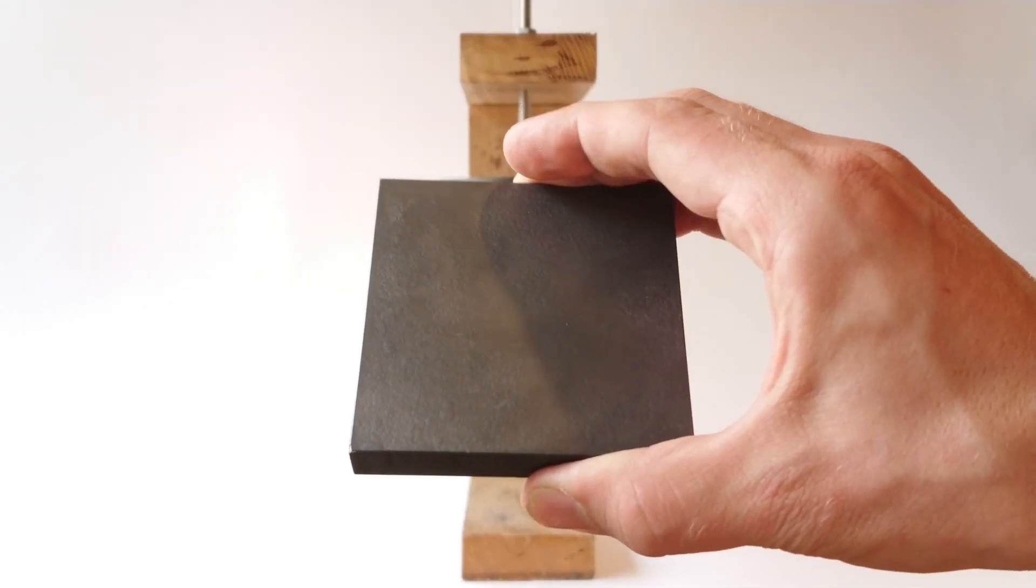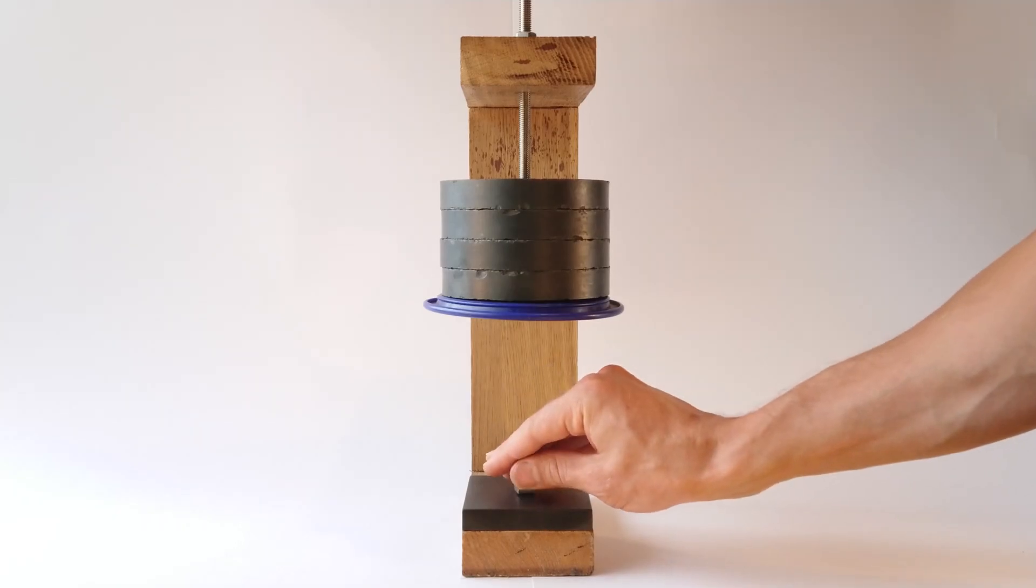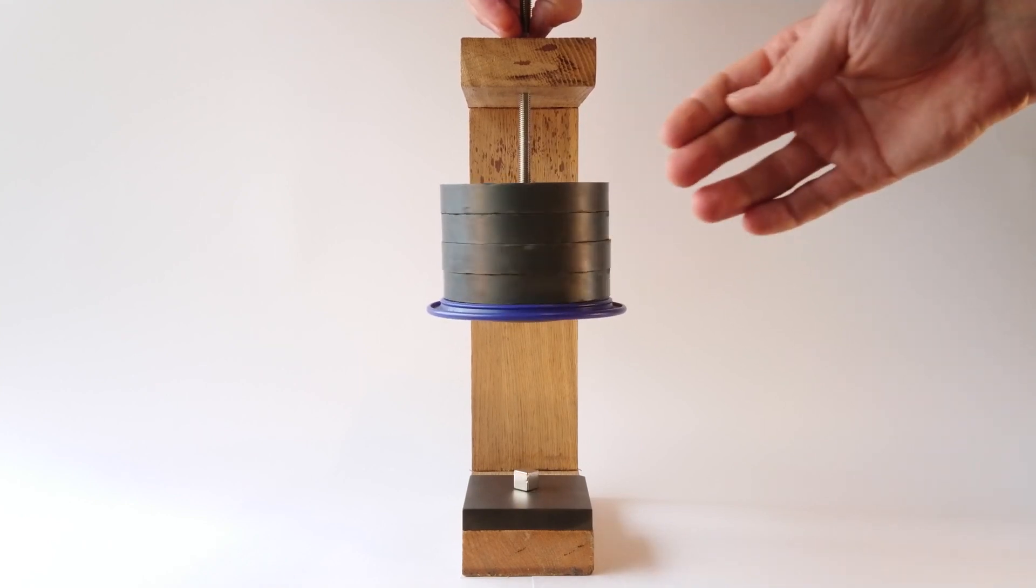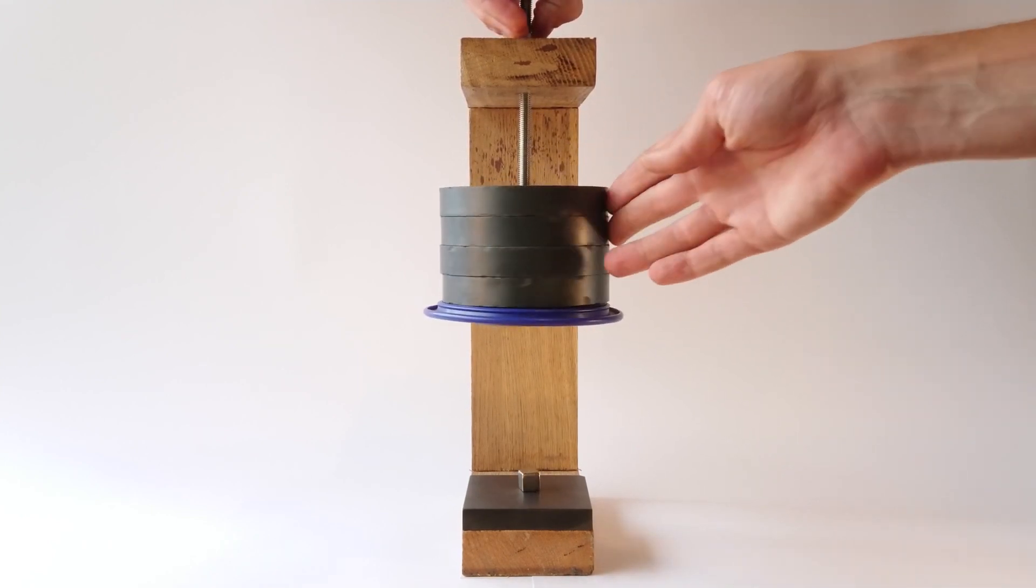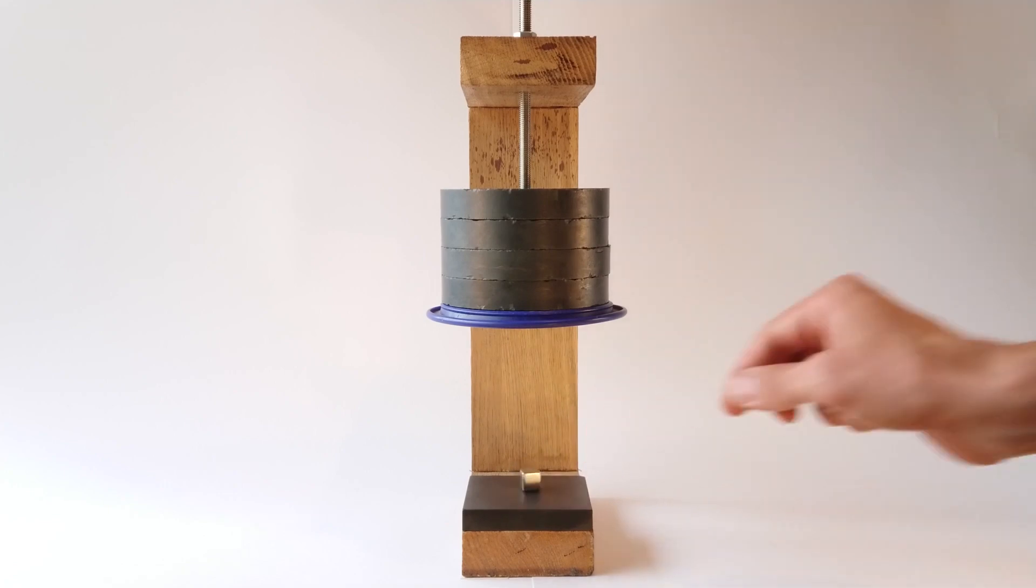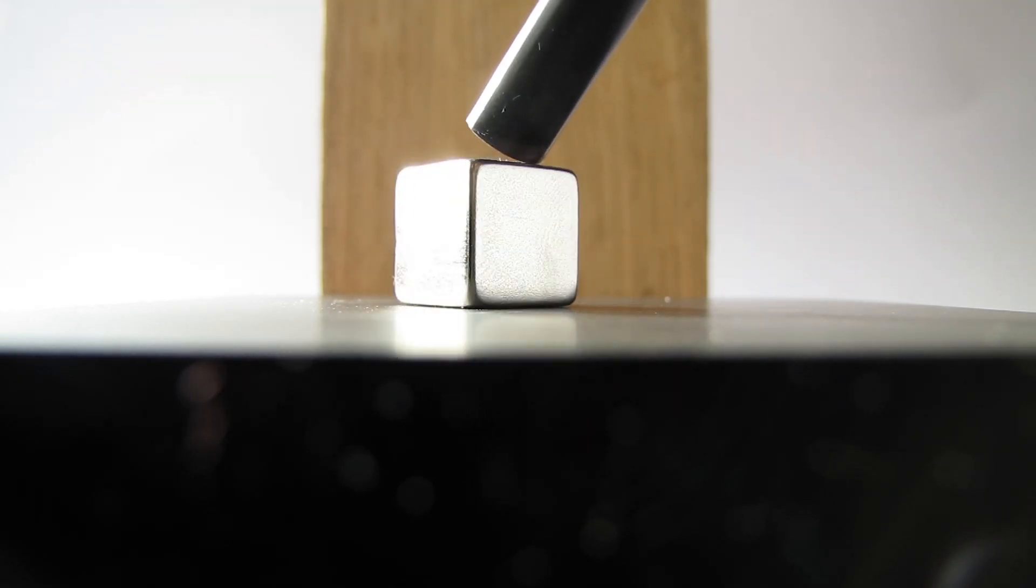It is possible to levitate small neodymium magnets over PG, but only when other magnets is placed above at a specific height. When most of the magnet's mass is compensated by attracting magnet above, the remaining mass can be pushed up by diamagnetic repulsion.